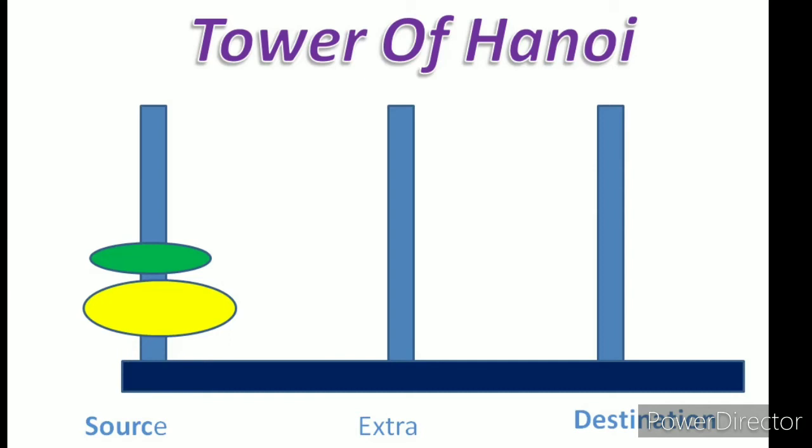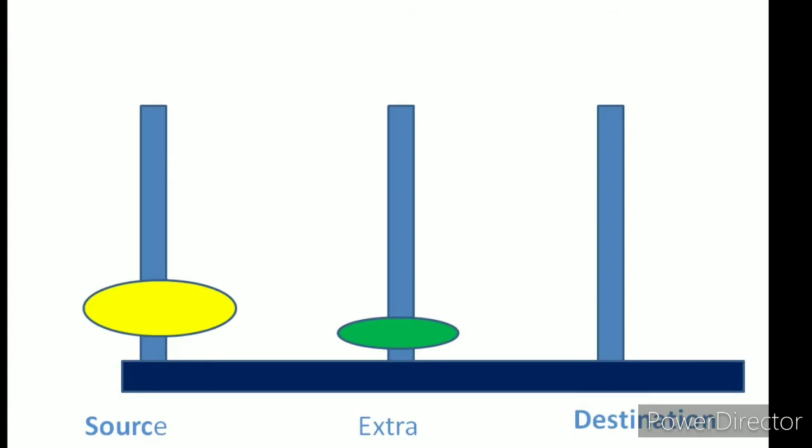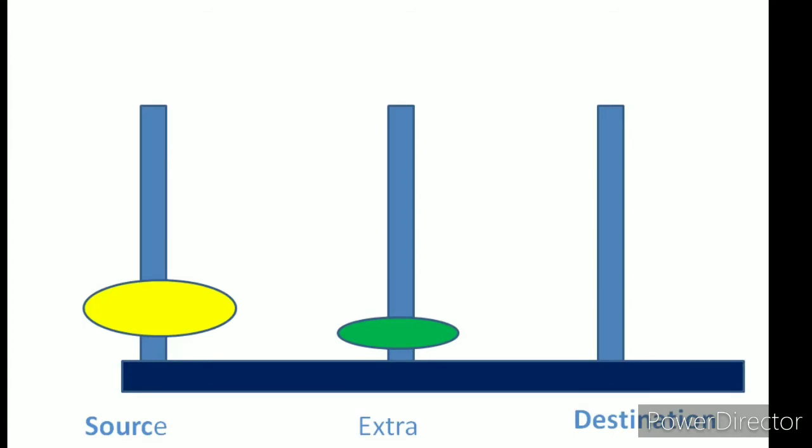So let us see how to do this activity. As you can see, there are only two disks. So this can be done like, as per the rule, I have moved the smaller disk. I have just put it in the extra pole.